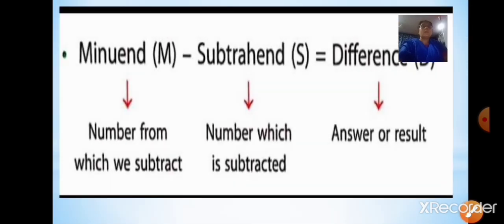Coming to the next operation, that is subtraction. In subtraction, the first number — the number from which we subtract — is called the minuend. The second number which is subtracted is called the subtrahend. The answer or result after subtracting the two numbers is called the difference.